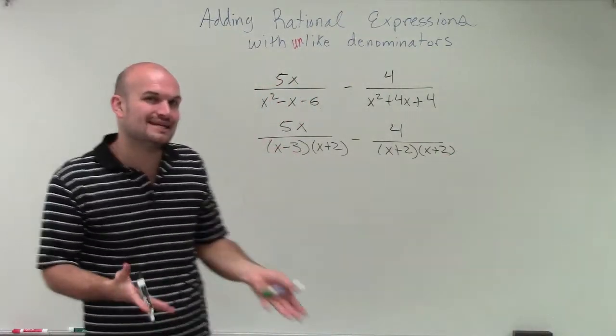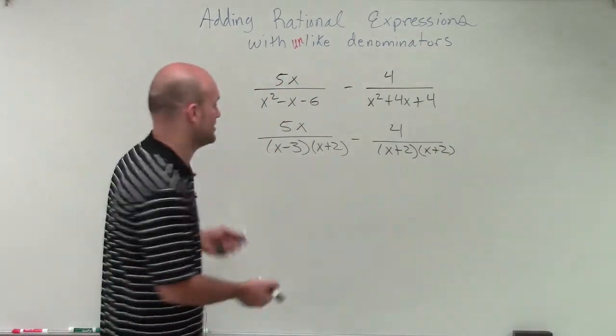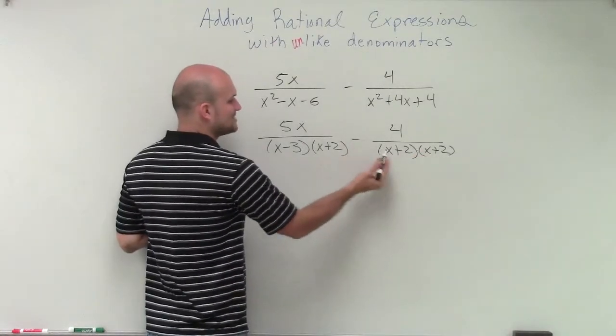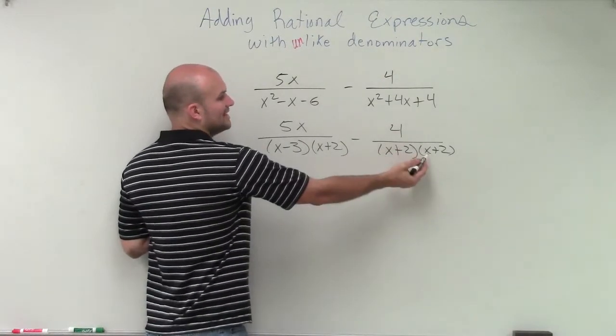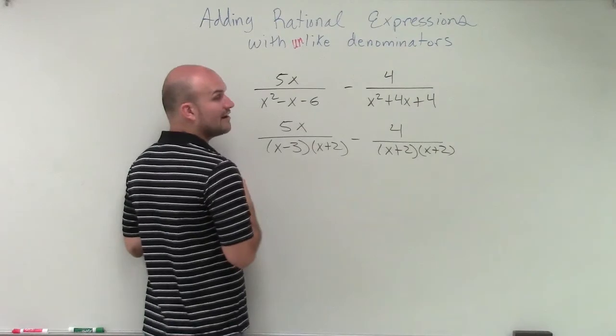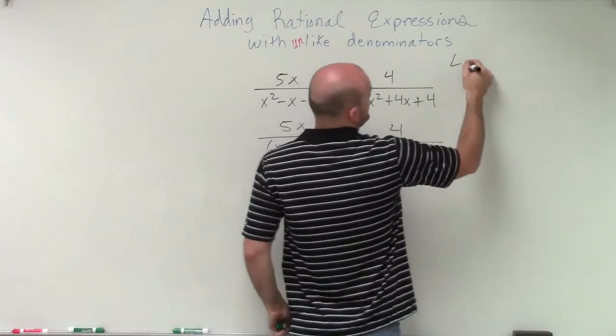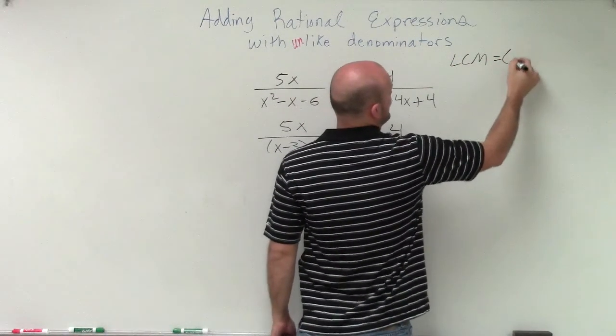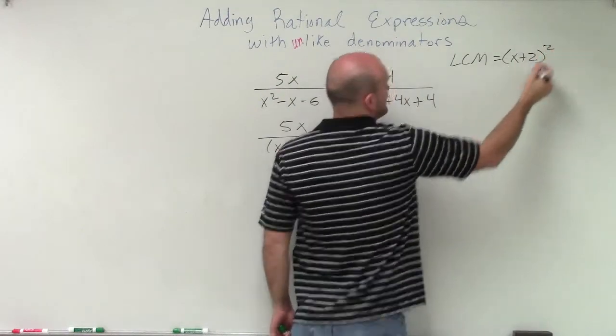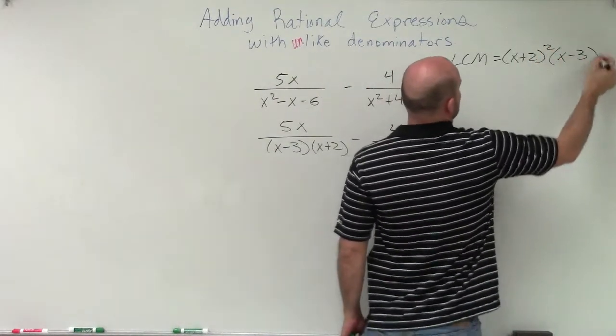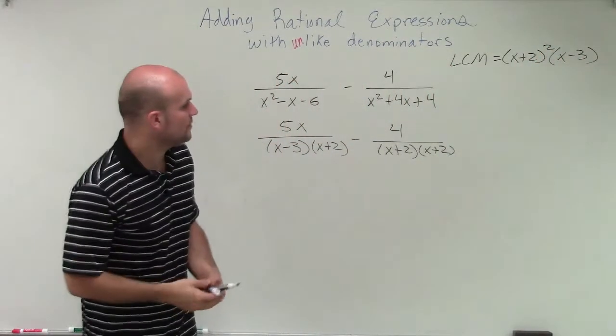So now, this is a little bit easier when looking to find my LCM. Wouldn't you agree? Here, I can see, my LCM, they both share an x plus 2. But here, I have an extra x plus 2, and here I have an x minus 3. So when determining my LCM, I'm just going to write it as x plus 2 squared to kind of save space, times x minus 3.